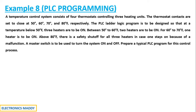At first, they have given a temperature control system that consists of four thermostats controlling three heating units. This first line is very important because thermostats are basically sensors. So there are four sensors used to control three heating units. I'll be labeling them as T1, T2, T3, T4 in my ladder diagram, and the heating units as H1, H2, H3, because there are only three heating units.